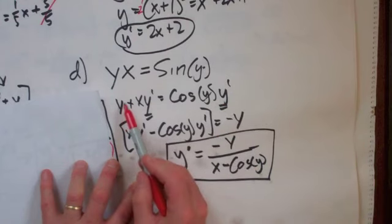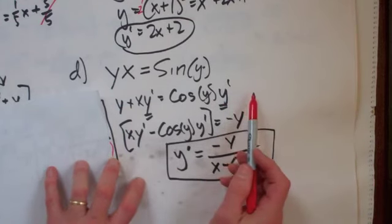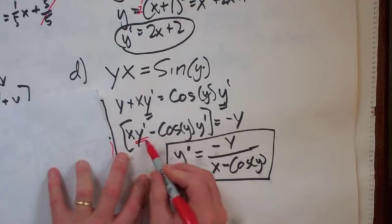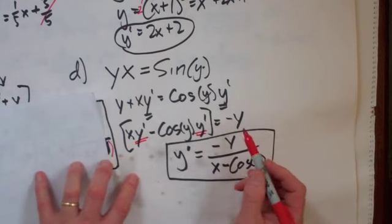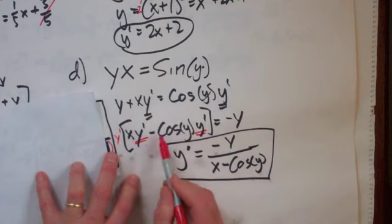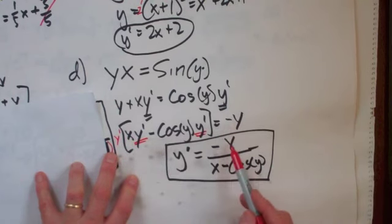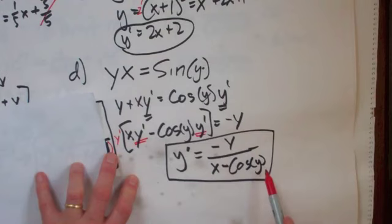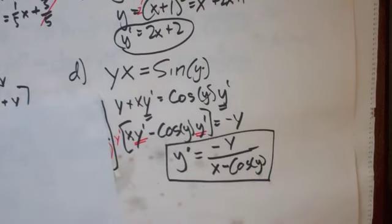And then I'm going to move the Y over to the other side, because I want it isolated. Then I factor out the Y primes, and then on the outside, I'll get the Y prime out here, and it'll just be X minus cosine Y. So that's negative Y then divided by X minus cosine Y. So that's problem one.